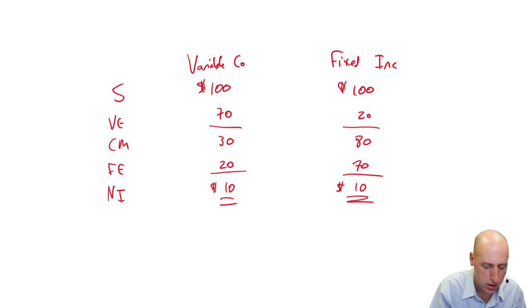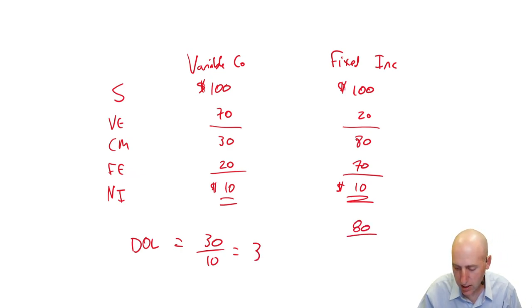For Variable Co, their degree of operating leverage, I like to call it operating leverage factor, is 30 divided by 10. It's 3. For Fixed Co, it's 80 divided by 10. It's 8.